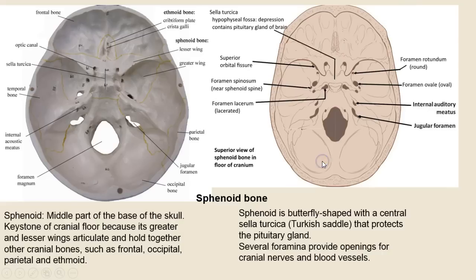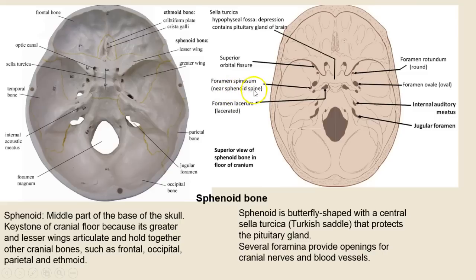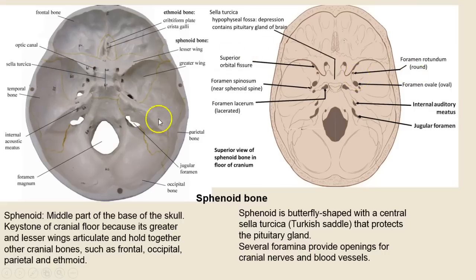The sphenoid — that's the Batman shape — I have it outlined here. There are lots of foramina: the foramen spinosum is near the spine ('spinosum' means spine-like); the foramen lacerum has a lacerated, jagged shape; the jugular foramen here is really part of the occipital; and the foramen ovale is oval-shaped.